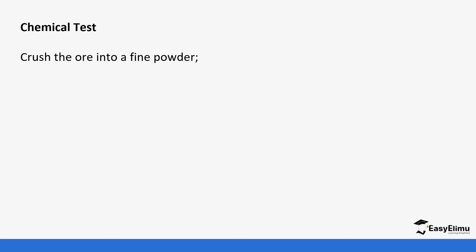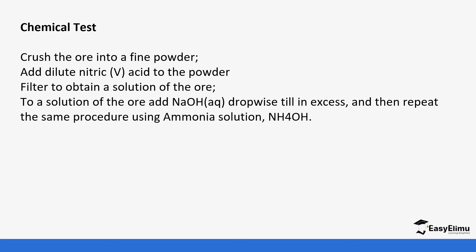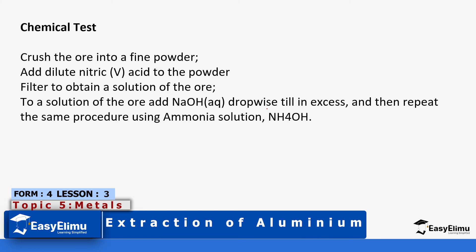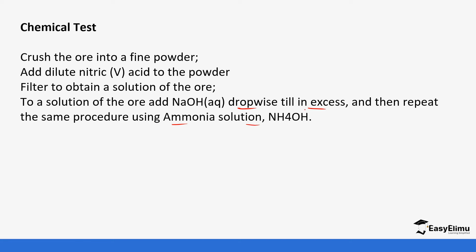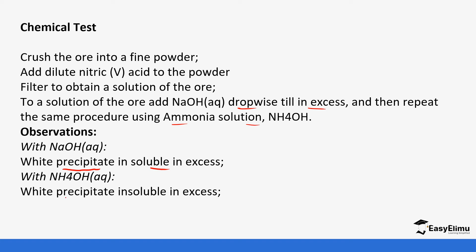The next thing we're going to look at is a chemical test for aluminium. If the ore containing aluminium is crushed into a powder and dilute nitric acid is added, then the solution is filtered, you get a solution containing aluminium ions. When sodium hydroxide is added dropwise to excess, a white precipitate forms which is soluble in excess. With ammonia solution, a white precipitate forms but it is insoluble. Remember, aluminium is part of the amphoteric ions, and it's one of the three ions that behave differently in the qualitative analysis with sodium hydroxide.